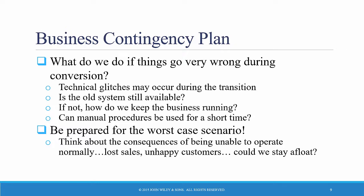The business contingency plan must deal with things that can go wrong during the conversion. What do we do if things go very wrong? For example, there could be technical glitches. The question is: is the old system still available? And if not, how do we keep the business running if we have a problem? Can manual procedures be used for a short time?